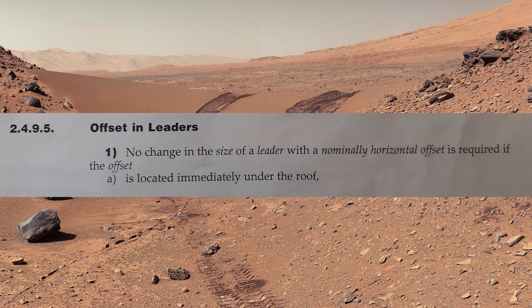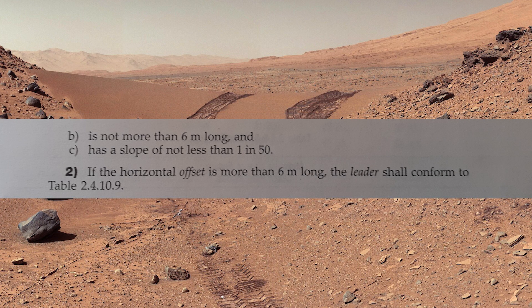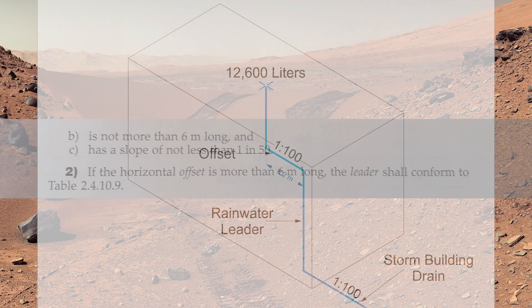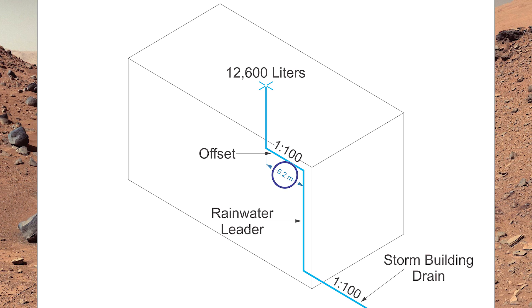Let's look at clause 2495: offsets in leaders. Number one — no change in the size of the leader with a horizontal offset is required if the offset is located immediately under the roof, is not more than six meters long, and has a slope of not less than 1 in 50. Number two — if the horizontal offset is more than six meters long, the leader shall conform to table 24109, which is the same table for sizing storm building drains. Our offset here is 6.2 meters — more than six meters long — and it is also sloping at 1 in 100.